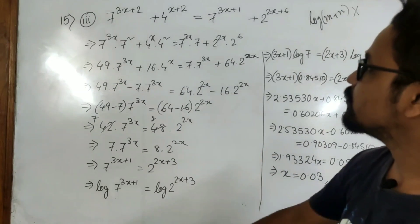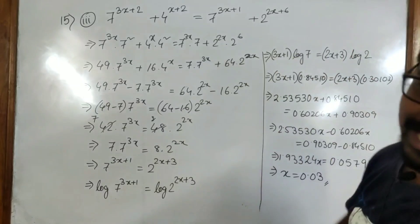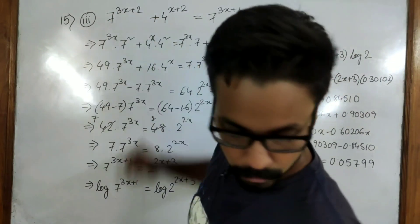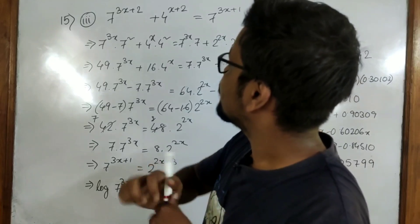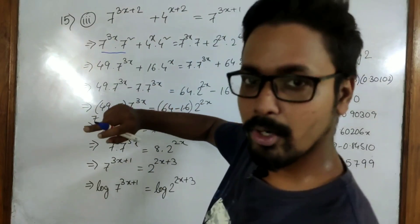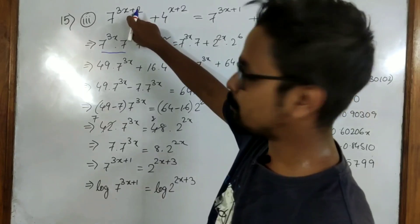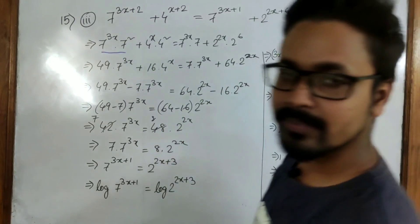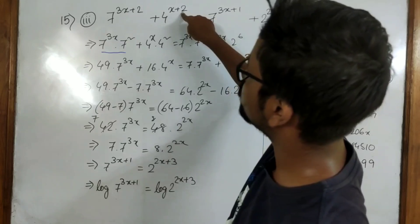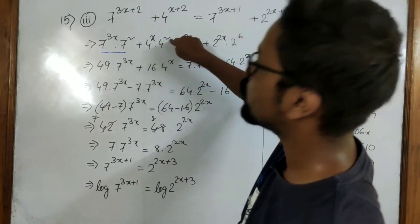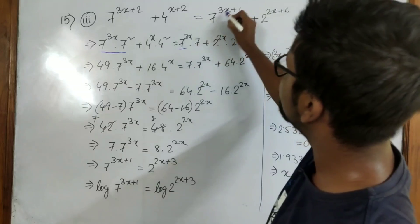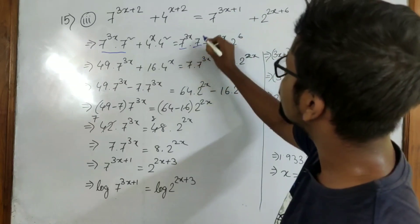So we will not take log at the beginning. Rather, we will split this up. 3 to the power 3x plus 2 we can write as 7 to the power 3x into 7 to the power 2. Since power is plus, it should be multiplied by the same base. Now 4 to the power x plus 2 means 4 to the power x into 4 to the power 2. Then here we have 7 to the power 3x into 7 to the power 1.